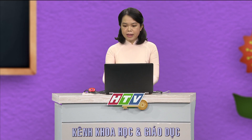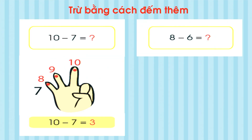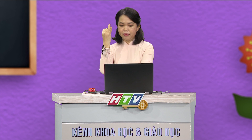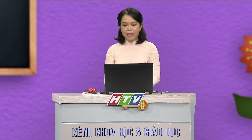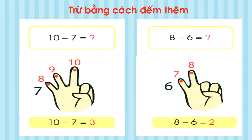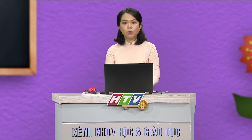Tương tự như vậy, cô mời các em cùng thực hiện phép tính 8 trừ 6. Các em sẽ đếm từ số bé là 6 tới số lớn là 8. Cô mời các em dơ tay lên và thực hiện cùng cô nhé. 6 rồi đến 7, 8. Cô vừa đếm thêm 2, vậy kết quả 8 trừ 6 sẽ bằng 2 đấy các em. Các em lưu ý, để trừ bằng cách đếm thêm, các em sẽ đếm thêm từ số bé cho đến số lớn trong phép trừ nhé.